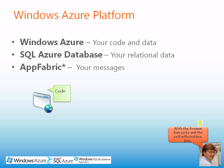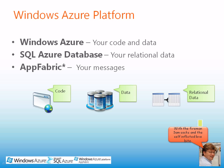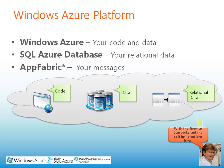Every application is a combination of code, data — semi-structured, unstructured data such as files and images — and relational data. With a cloud computing platform like Windows Azure Platform, we can take those three pieces and host them out there on a data center that isn't yours.